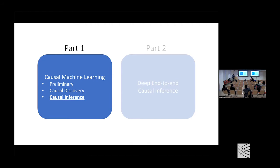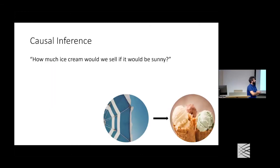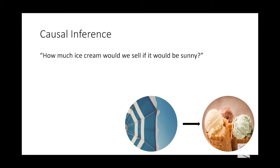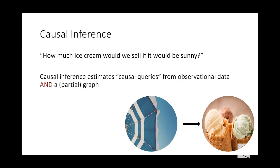The second speaker takes over to discuss causal inference. After causal discovery finds edges and graphs, causal inference asks: how much ice cream would we sell if it were sunny, given that sunshine causes ice cream consumption? Causal inference estimates those causal queries — and all such queries assume some knowledge of a graph, partial graph, or equivalent assumptions.